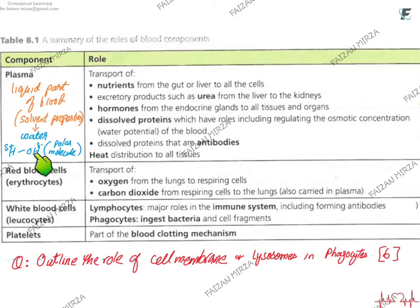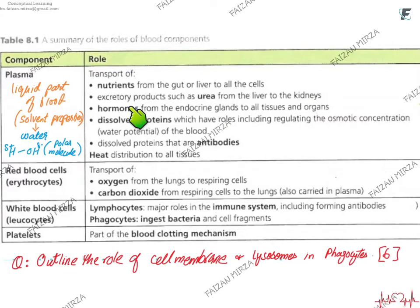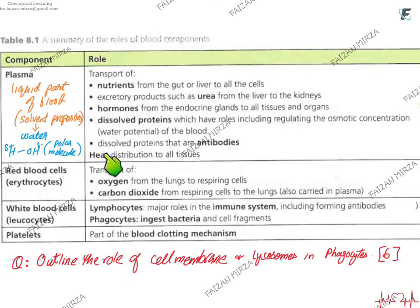There are three main components of blood: plasma, red blood cells, white blood cells, and platelets. Plasma is the liquid part of the blood. Its solvent properties are primarily due to water, which being a polar molecule is capable of transporting nutrients and excreting waste such as urea from the liver to the kidneys. It allows transportation of hormones and dissolved proteins, which are important in maintaining the osmotic concentration and water potential of the blood. Plasma also distributes heat uniformly to all tissues.